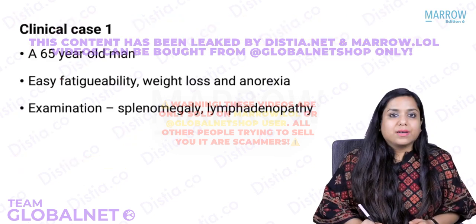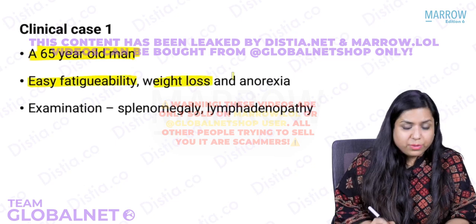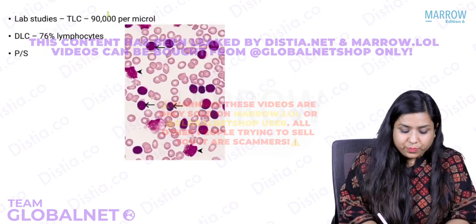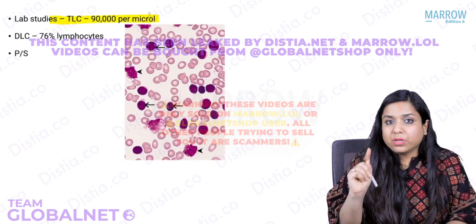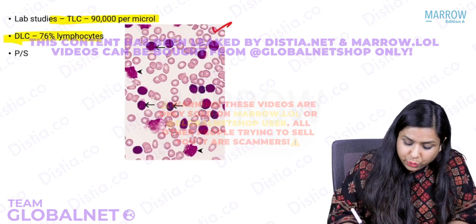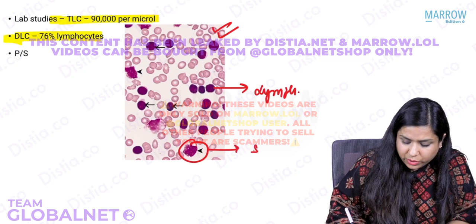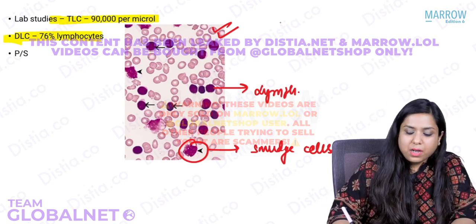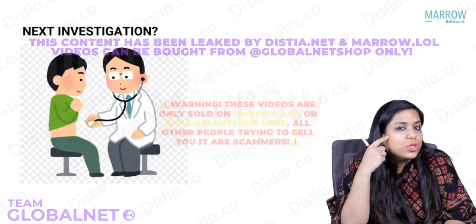A 65-year-old man with easy fatigue, weight loss, splenomegaly, and lymphadenopathy: CBC shows TLC of 90,000 with 76% lymphocytes on DLC. Peripheral smear shows many lymphocytes and smudge cells. With this history and peripheral smear, think of CLL. Next investigation would be flow cytometry to confirm CD5/CD23 dual positivity.